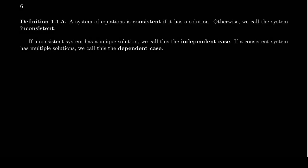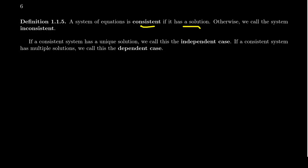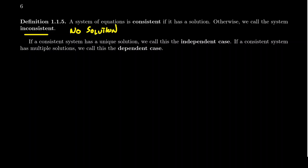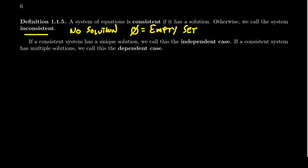We say a system of equations is consistent if it has a solution — meaning at least one solution. There could be one solution, two solutions, infinitely many solutions; as long as it has at least one, we call that a consistent system. If a system is not consistent, it's inconsistent, meaning it has no solution. You'll often see no solution represented by a circle with a line through it — the empty set symbol — indicating the solution set contains nothing.